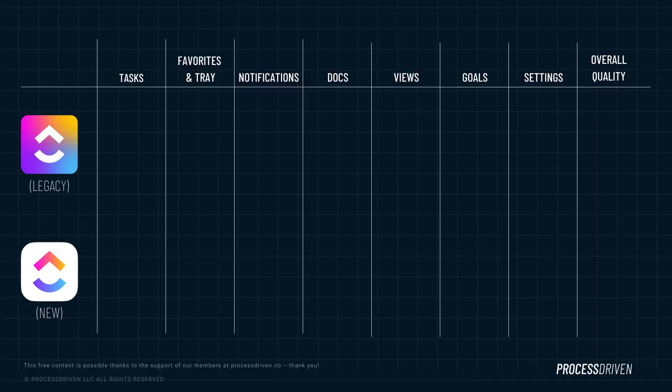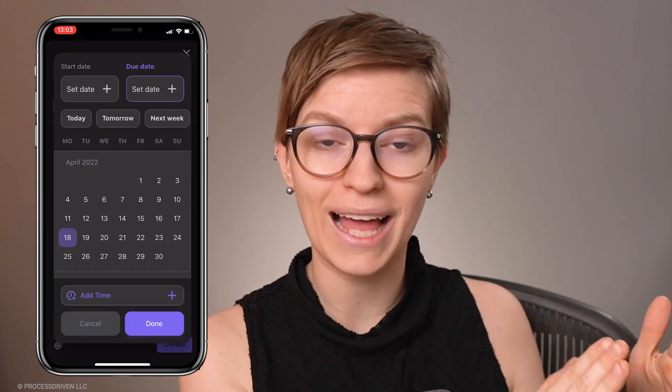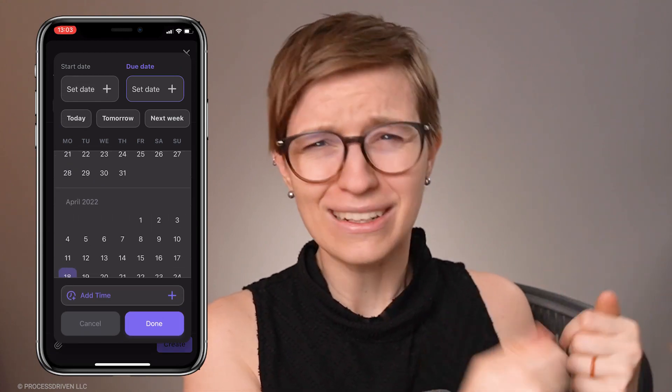I'll walk you through what I mean by incomplete. First up, we have tasks — the ability to create tasks, manage tasks, and do all the things you need to do in ClickUp. Comparing the features you normally have on ClickUp on your computer, the older app has pretty much every feature you can imagine. But the new app still doesn't have features like recurring due dates or the use of relationships. So while tasks exist on that new mobile app and they're nice and flashy, you can't do everything you'd be able to do on a computer or even on the old sluggish mobile app.